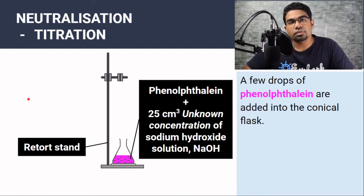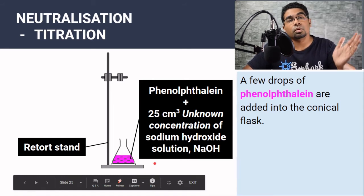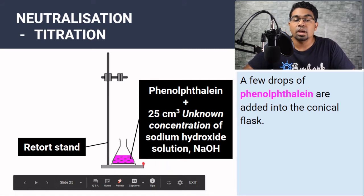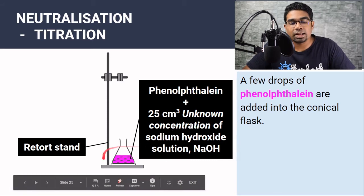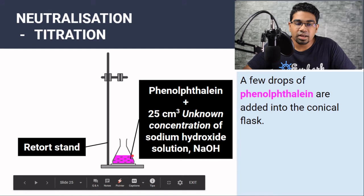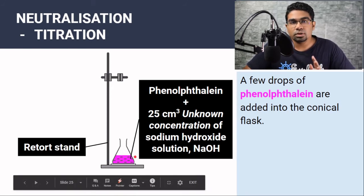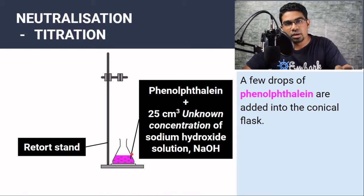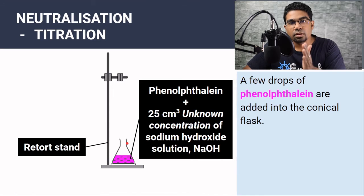In this method of titration, we find the exact volume of acid needed to react completely with all the sodium hydroxide in solution. We need an indicator to tell us when the reaction is complete — when all the sodium hydroxide molecules have reacted with the acid. So we add a few drops of phenolphthalein. Phenolphthalein is pink when the solution is alkaline and colourless when neutral or acidic. This is why we must put the alkali in the conical flask, not the acid — because when the reaction reaches neutralization, phenolphthalein changes from pink to colourless, giving us a clear colour change.